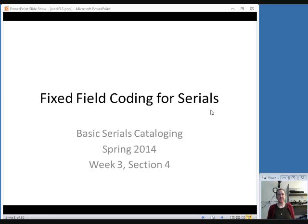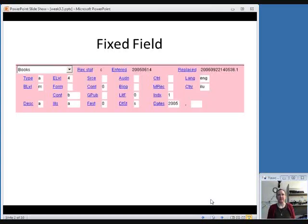The fixed field, on the other hand, is made up of what's called fixed length data elements, and they are just what they sound like. They're fixed length, meaning that there's usually one to three characters you can put in there, and your choices for what to put in there are fixed as well. There are predetermined codes that you have to choose from in order to decide what to put in these fixed length data elements.